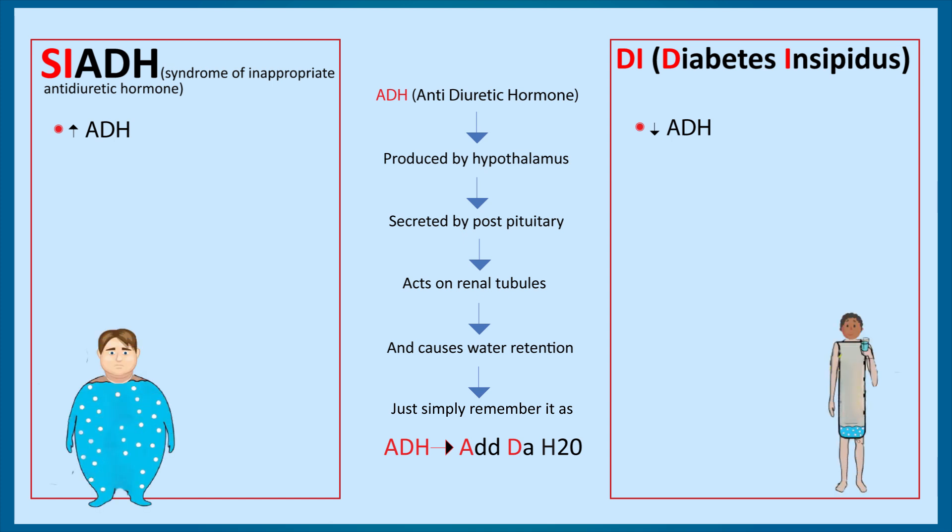In SIADH there is increased anti-diuretic hormone, so there would be increased water retention. As a result of increased water there would be dilutional hyponatremia — the sodium content would be less compared to the free water retained. Decreased sodium would cause decreased plasma osmolality. While in diabetes insipidus there is decreased ADH, so the body cannot retain water and starts losing water. As a result there would be increased sodium content and therefore increased plasma osmolality.